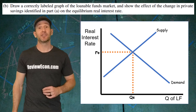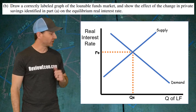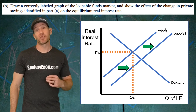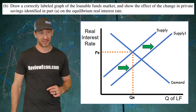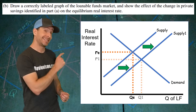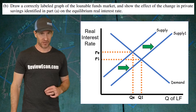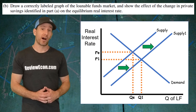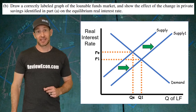Label that equilibrium real interest rate and also that equilibrium quantity of loanable funds. Now because of the increase in savings, we are going to shift the supply curve to the right. Savings is one of the primary components of that supply curve in the loanable funds market. Shifting it to the right will cause a decrease in the real interest rate. Make sure you show that decrease, and also show an increase in that quantity of loanable funds.